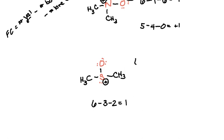And oxygen has six valence electrons, one bond, and six lone electrons, so it's negative one.